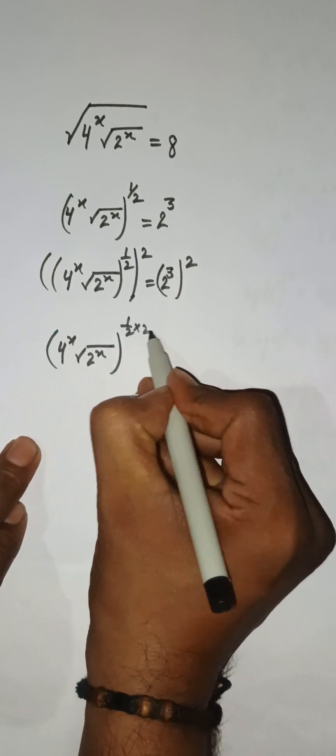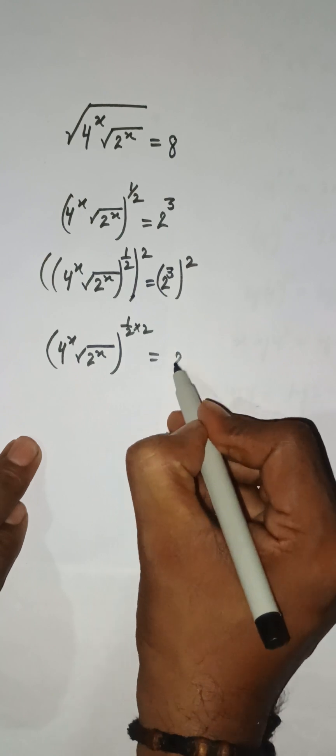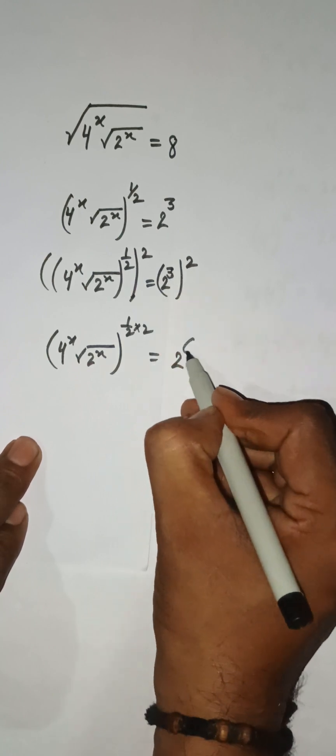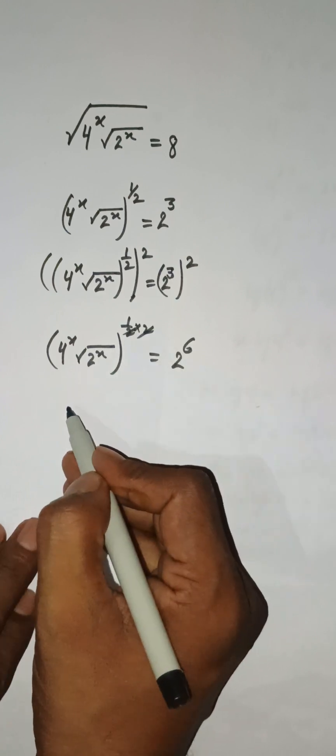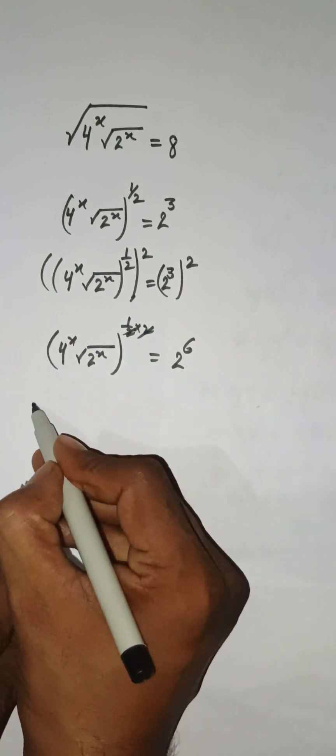This 1 by 2 and 2 will multiply together and we have 2 to the power 2 times 3, that is 6. So we can say that this 2 and this 2 will cancel.